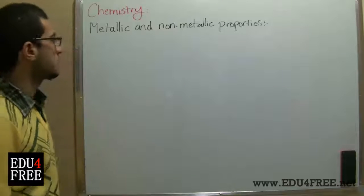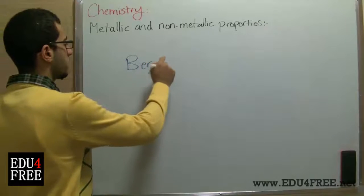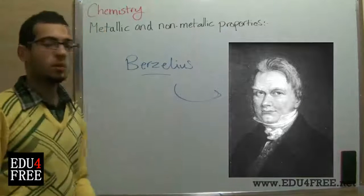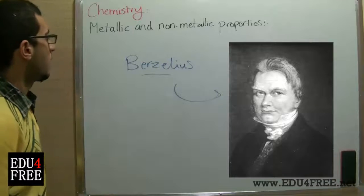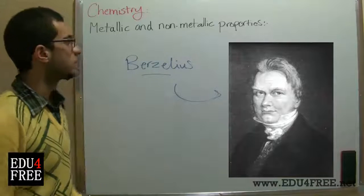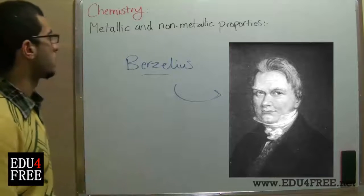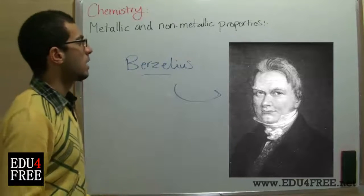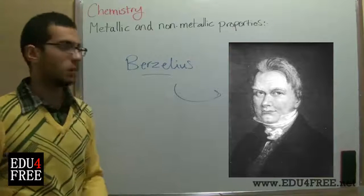In the 19th century, a scientist called Verzilius managed to divide the elements into metals and non-metals. And although this is some kind of an old classification for elements, we still study this classification because it's still working and elements can really be classified into metals and non-metals. And there's a third group which have some properties of metals and non-metals, which is called metalloids.